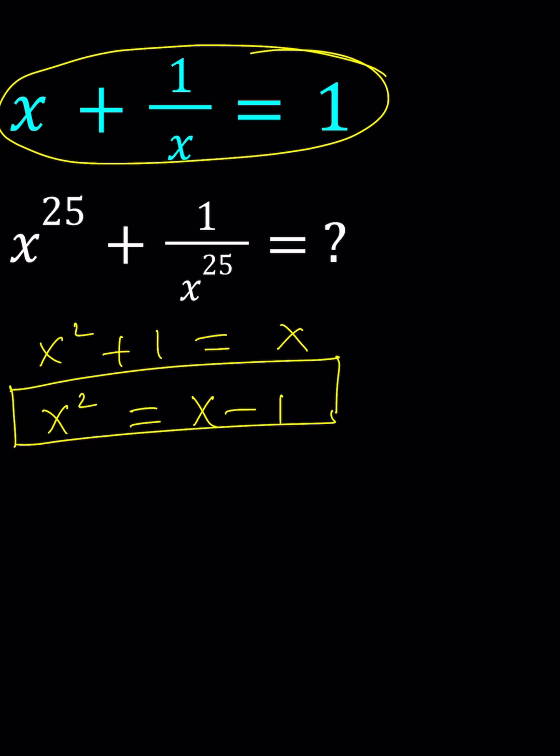For example, if you multiply both sides by x, you can get x cubed, which is x squared minus x. Wait a minute, x squared is x minus one. So this is x minus one minus x, which means x cubed is equal to negative one.